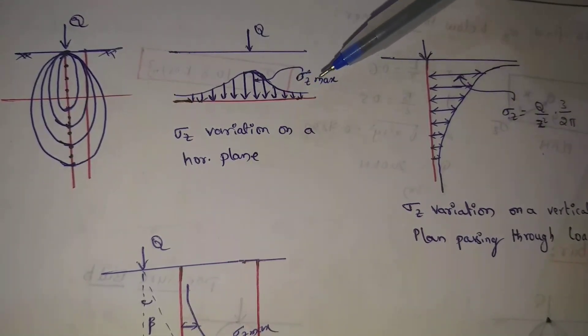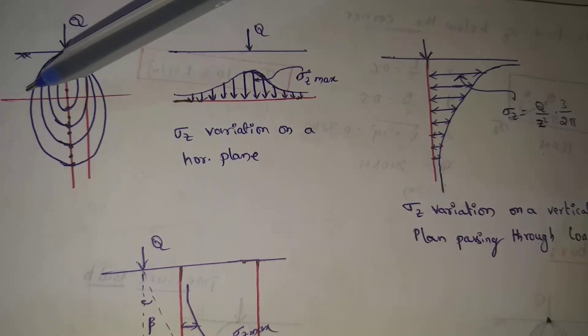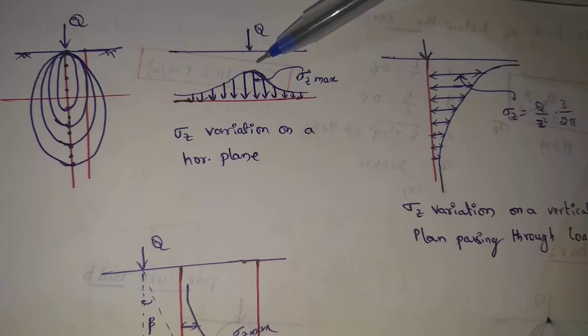Sigma Z variation on horizontal plane. In this horizontal, in this section, maximum is the point. If the point load is the point.